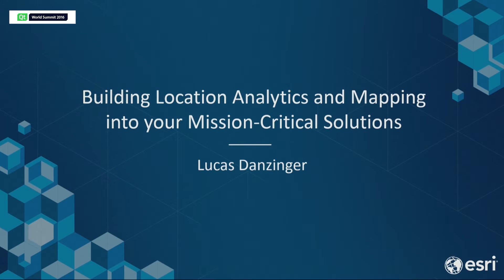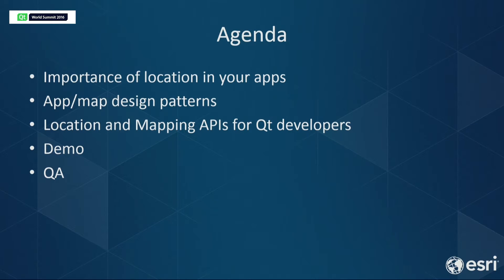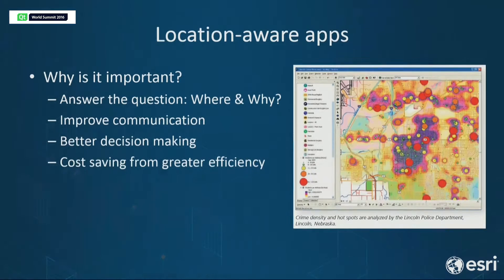Today we're going to look over a few things: first, the importance of location in your apps and why you might want to integrate location and mapping; second, app map design patterns — basically how you can go about integrating location and mapping into your apps; next, the different options available for you as a Qt developer; then a couple of demos; and some Q&A at the end.